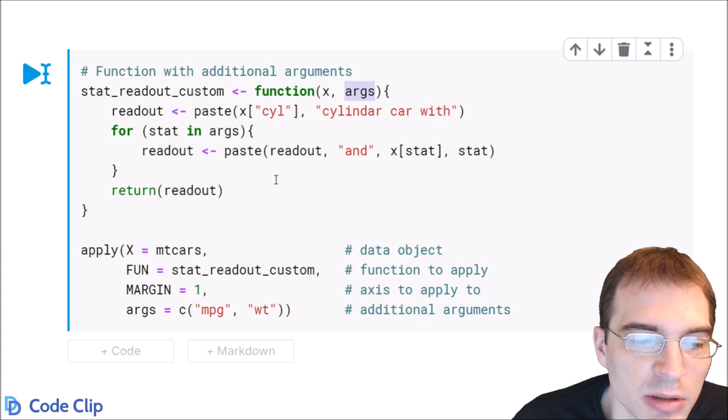So then after the margin, we can pass in any number of additional named arguments that we need to. So this function requires an argument called args. Here we're going to say comma args. And then we're going to pass in what those arguments are going to be.